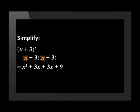There is a shortcut to squaring a binomial. But before we learn that, let's practice FOIL once more. We begin by multiplying the first terms, which equals x squared.